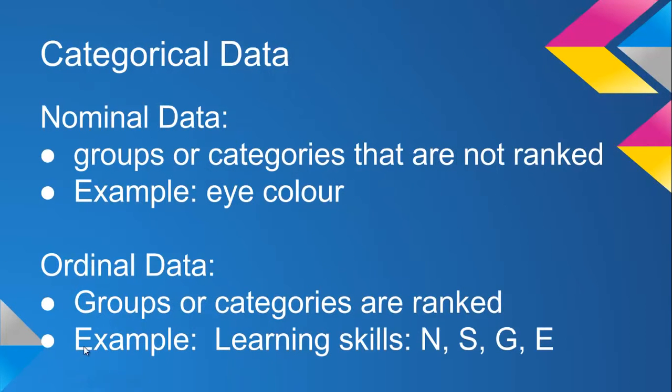Two types of categorical data, and the way we kind of remember what they are is the nominal order means nominal data is no order, and ordinal data is order. So nominal is groups or categories not ranked, so we can't say one eye color is higher than another. Ordinal data is where groups or categories are ranked, so we can call them learning skills.